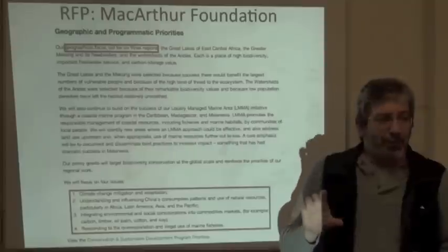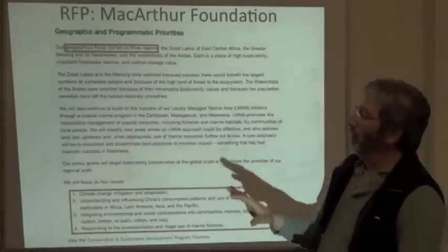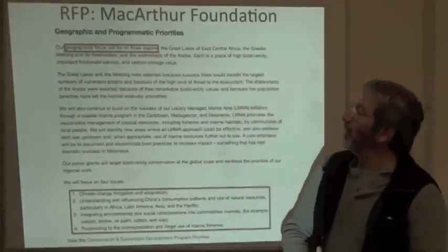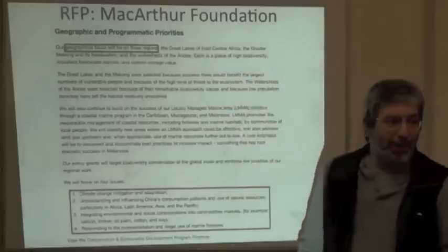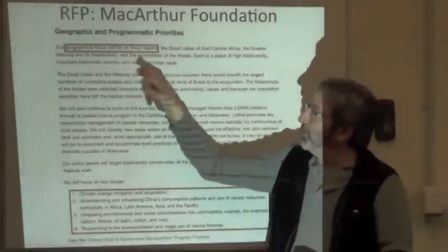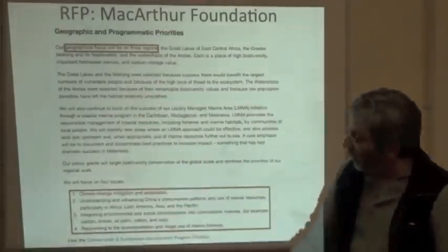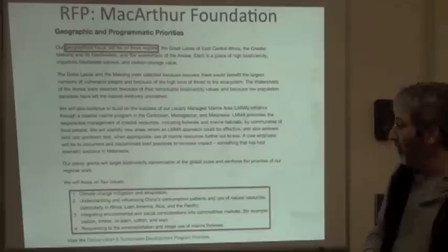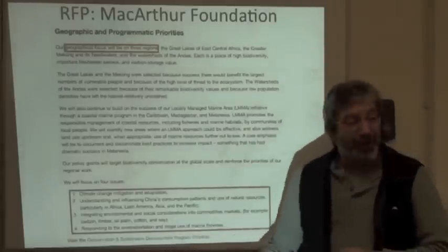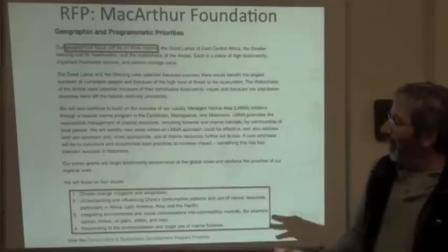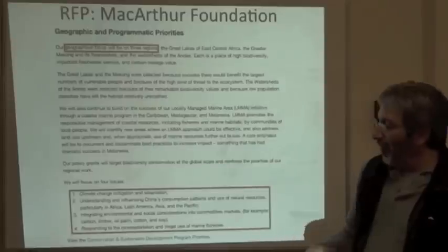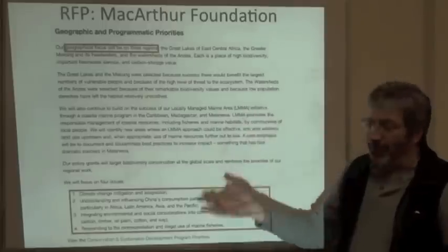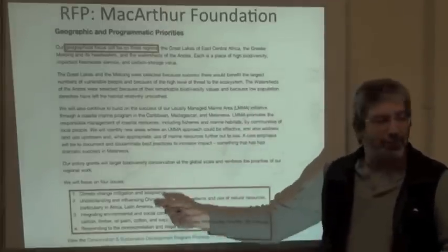MacArthur has a rolling set of geographic foci. At this moment the geographical focus is on three regions: the Great White Lakes of East Central Africa, the Greater Mekong in Southeast Asia, and the watersheds of the Amnes. They also focus on four issues: climate change mitigation and adaptation, environmental and social considerations in commodities markets, and over-exploitation and illegal use of marine fisheries. So if you come in with a project focused on, say, deforestation, this funding agency may not be interested if it doesn't fit within these categories.